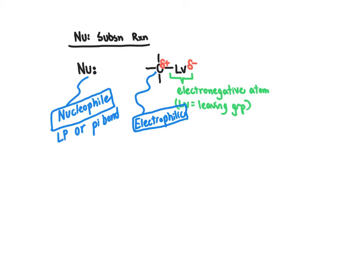What's going to happen during a nucleophilic substitution reaction is that the nucleophile and the electrophile are very drawn to one another because opposites attract. The nucleophile comes in and replaces the leaving group within the molecule. The leaving group departs during the course of the reaction and is replaced with the nucleophile, giving us a product with a new carbon-nucleophile bond. The leaving group departs and takes the two electrons from the covalent bond between carbon and the leaving group with it when it leaves.